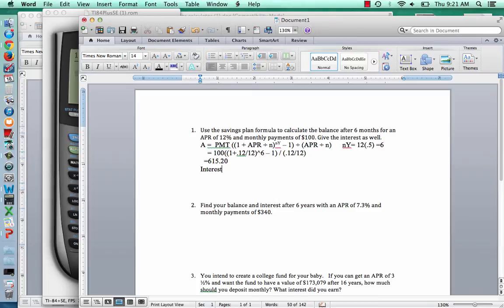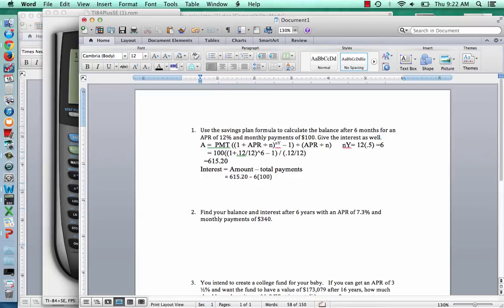So that's how much it will grow to after 6 months. Now to find the interest, the interest in general is always the amount that it grew to, the future amount minus the total payments. So in this case, the interest, the amount that it grew to was the $615.20, so we use that answer there. The total payments, we made six monthly payments of $100. So 6 times 100, that should give us the $600. So $615.20 minus $600, $15.20 is our interest.